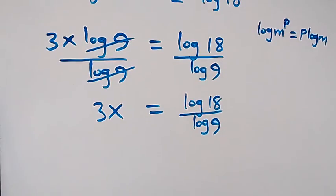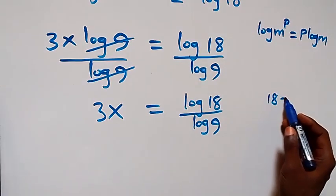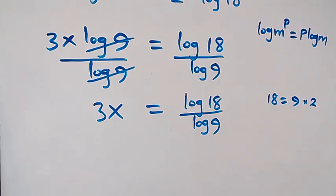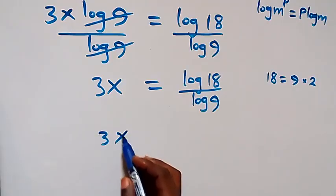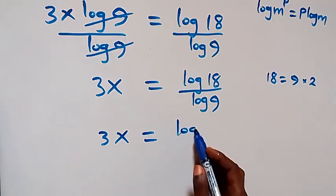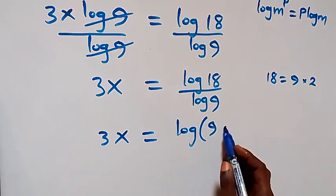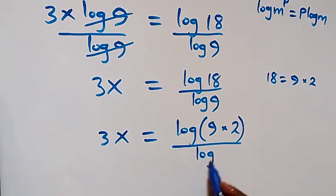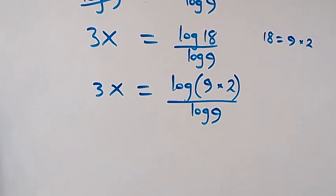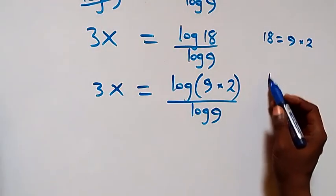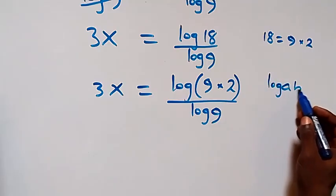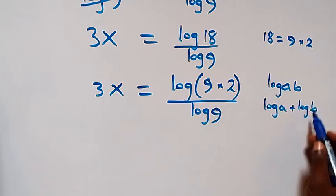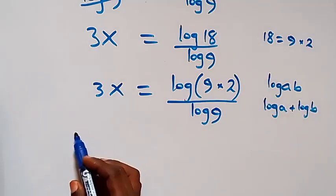Also from here, 18 can be written as 9 multiplied by 2. That implies that here we have 3x equals to log(9 times 2), then divided by log 9. When we apply the law of logarithms — log(a times b) is the same thing as log a plus log b.